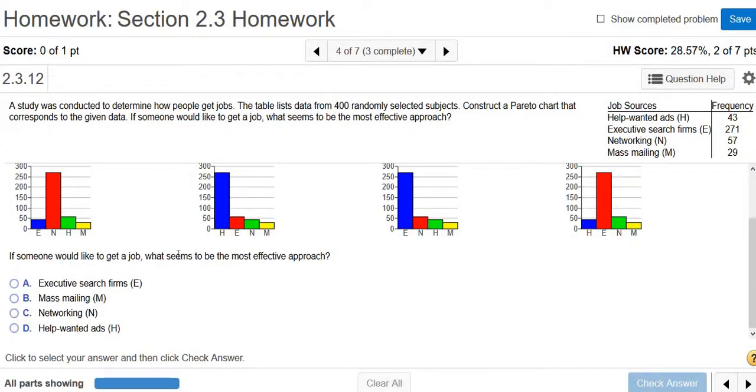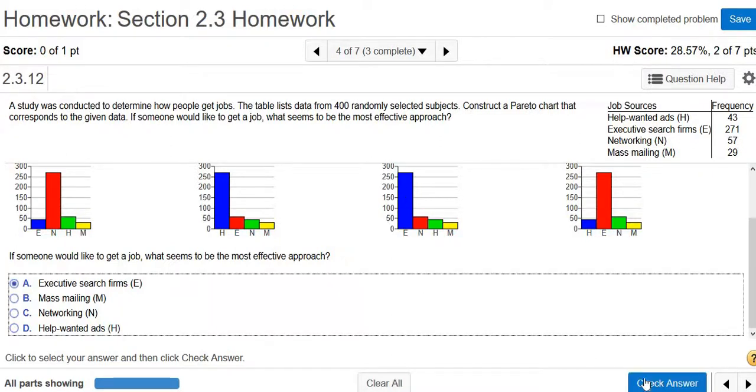If someone would like to get a job, what seems to be the most effective approach? So obviously E, executive search firms. It's very clear from the Pareto chart what is the most important thing. And that's really the point of a Pareto chart. Anyone can look at this and they can say, oh yeah, obviously executive search firms are more important based off this graph. So the answer is executive search firms.